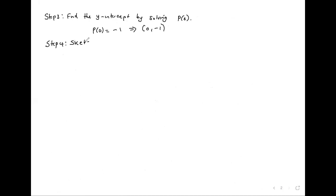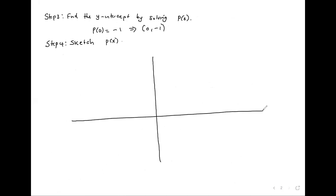Sketch P of x. To sketch, we have intercepts at negative 1, at (negative 1 minus root 5) over 2, and at (negative 1 plus root 5) over 2.